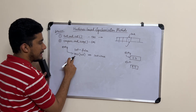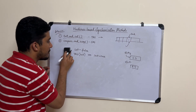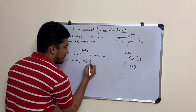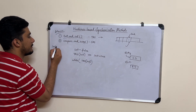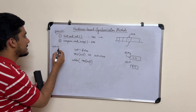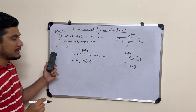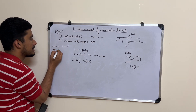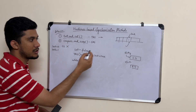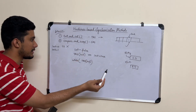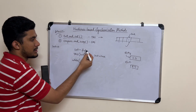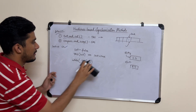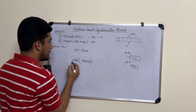Initially we set the lock to false, meaning the critical section is open for use. In the entry section we check: while test-and-set(lock) — if the lock was already true, that means no other process is allowed to enter the critical section, so we enter a busy-wait condition. This part is your entry section.